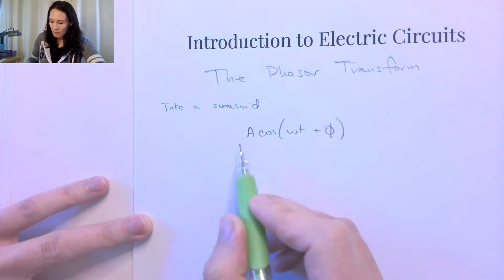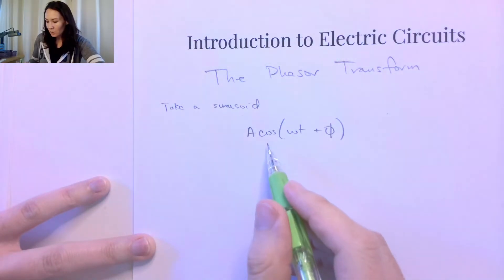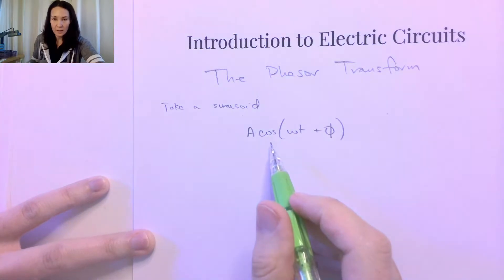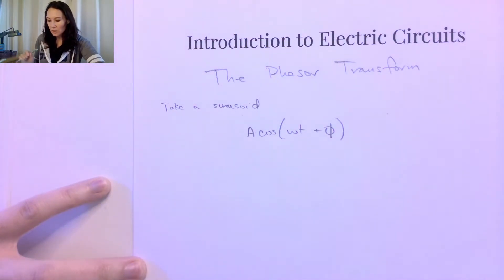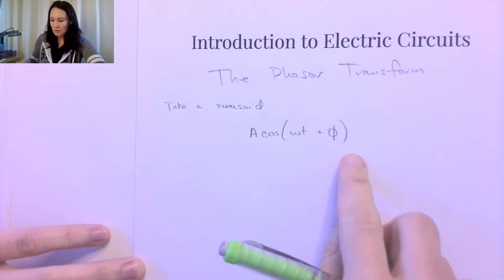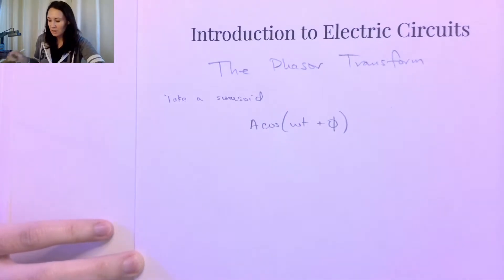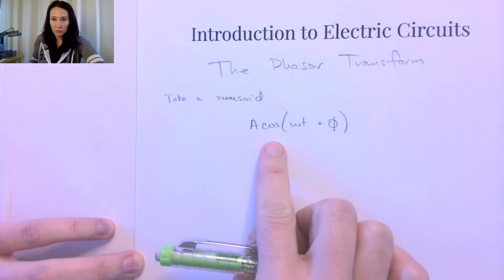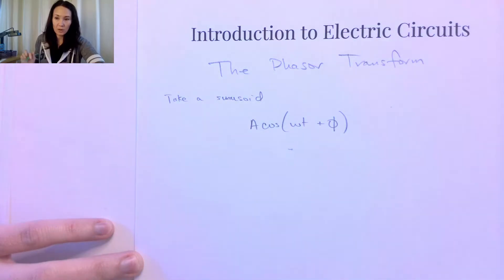We can express any sinusoid as either a sine or a cosine. We can use phase shift and the phase angle to basically turn a sine into a cosine. So we're going to pick one — we're going to express most of our voltages and currents with the cosine function.